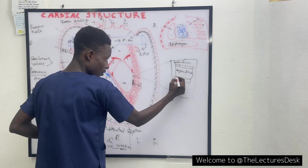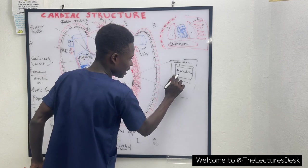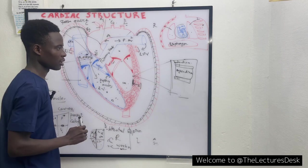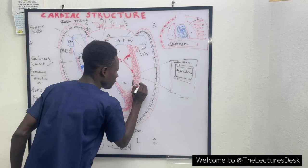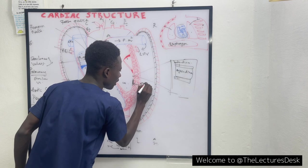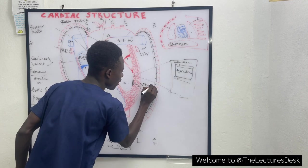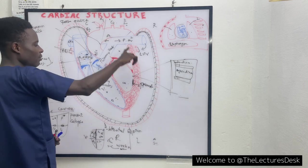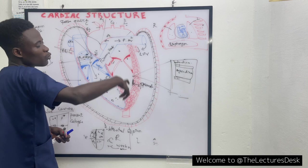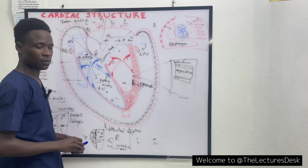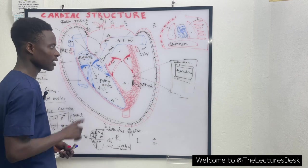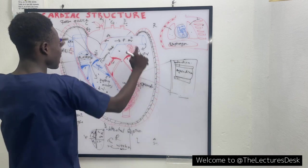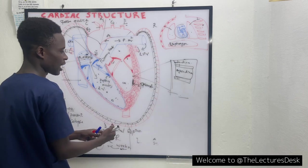The last layer is the outermost one, called the epicardium. The epicardium is the outermost layer that protects the heart. The heart is also enclosed in a sac-like structure called the pericardium.